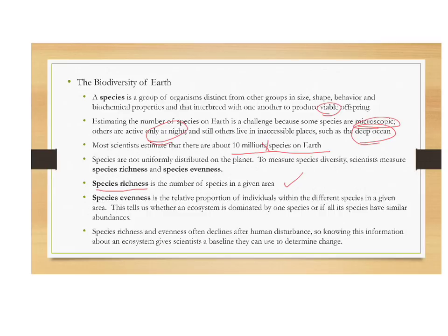Species richness and species evenness often decline after human disturbance — in fact, it almost always does. Knowing this information about an ecosystem gives scientists a baseline from which they can determine change. There really aren't many ecosystems on Earth that aren't being profoundly influenced by human action, so we try to establish what the ecosystem would look like without human influence to estimate our impact.